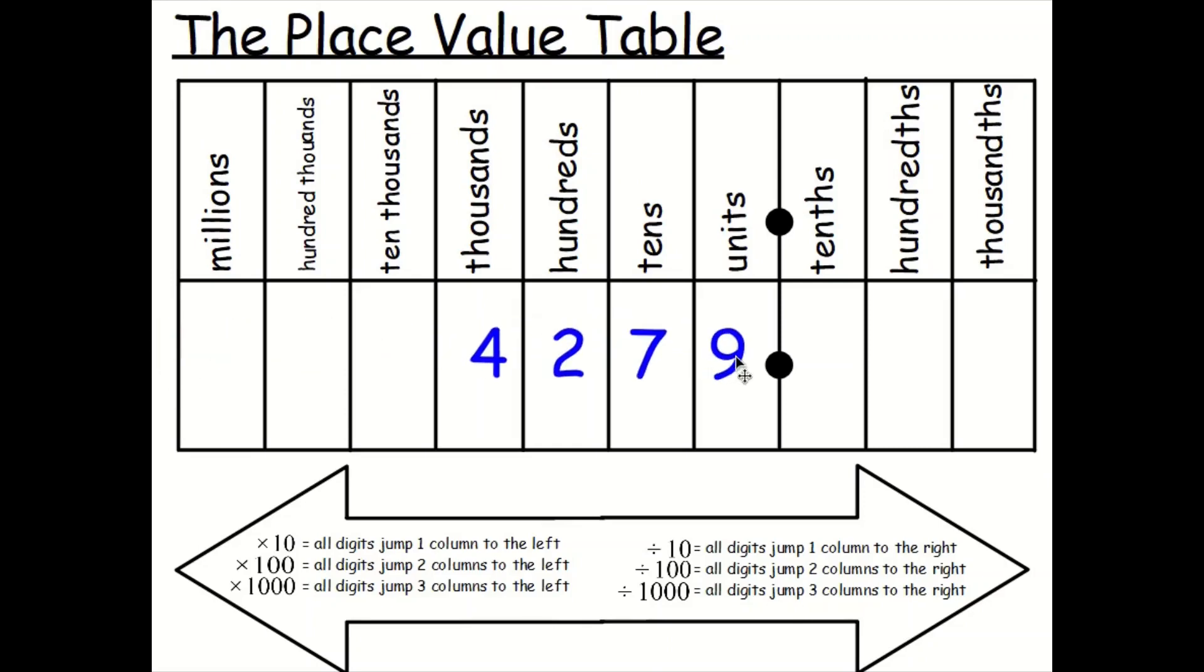So let's start off with a number, 4,279. Let's write in blue here. 4,279. And let's divide it by 10. What does it say we need to do? We need to jump all digits one column to the right. We've divided it by 10 by jumping to the right. What's our new number? It's 427.9.